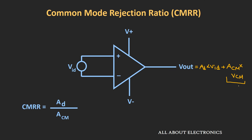How well the op-amp is able to suppress this common mode input signal is defined by the parameter known as the common mode rejection ratio. It is the ratio of differential gain divided by the common mode gain. In decibel, it can be represented as 20 log of differential gain divided by common mode gain.